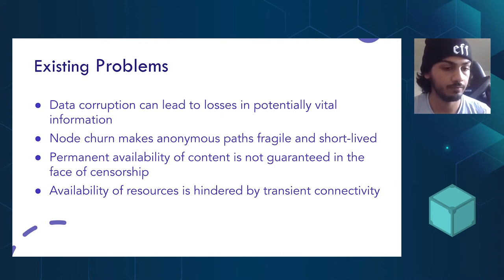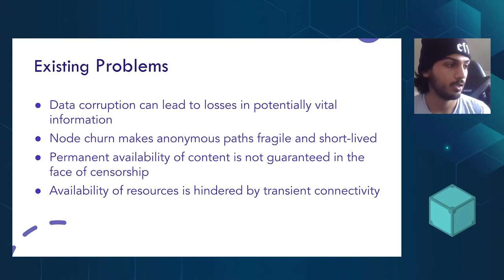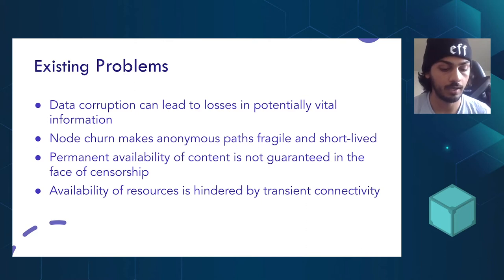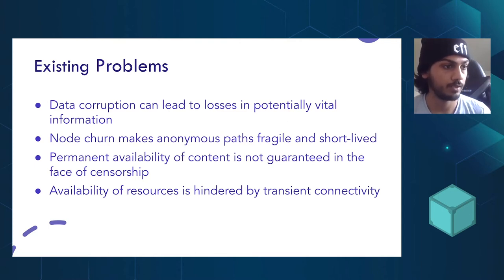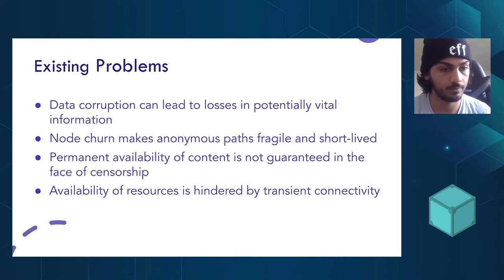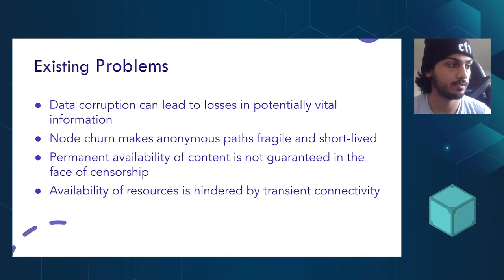You also have the problem of churn, where devices can just go offline for any reason whatsoever — I could just decide I want to turn my computer off. Also, there's the issue of censorship: if there are people actively targeting certain types of data on the network, they could make sure that it's not there. And finally, transient connectivity — poor internet connectivity can happen for all kinds of reasons in a distributed system, so it's important to have that consideration.